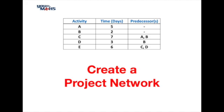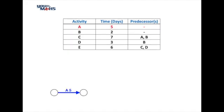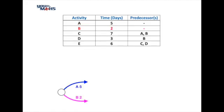Activity A and B have no predecessors, so we'll start first of all with activity A — that's just a simple line starting from the beginning. We'll use circles and label these as nodes within the network. Activity B will be the same, it comes off the beginning because there are no predecessors, so those are our first two tasks done.